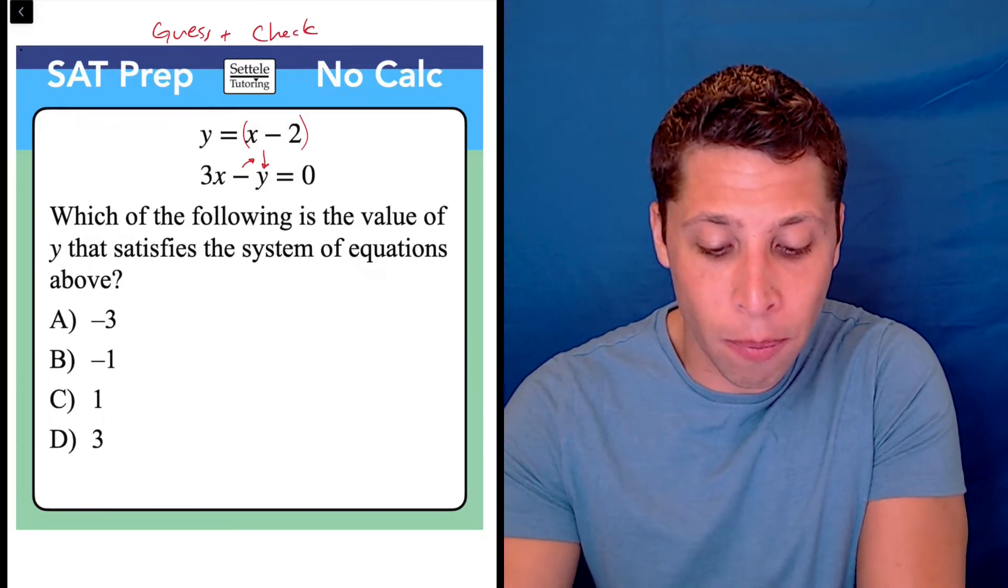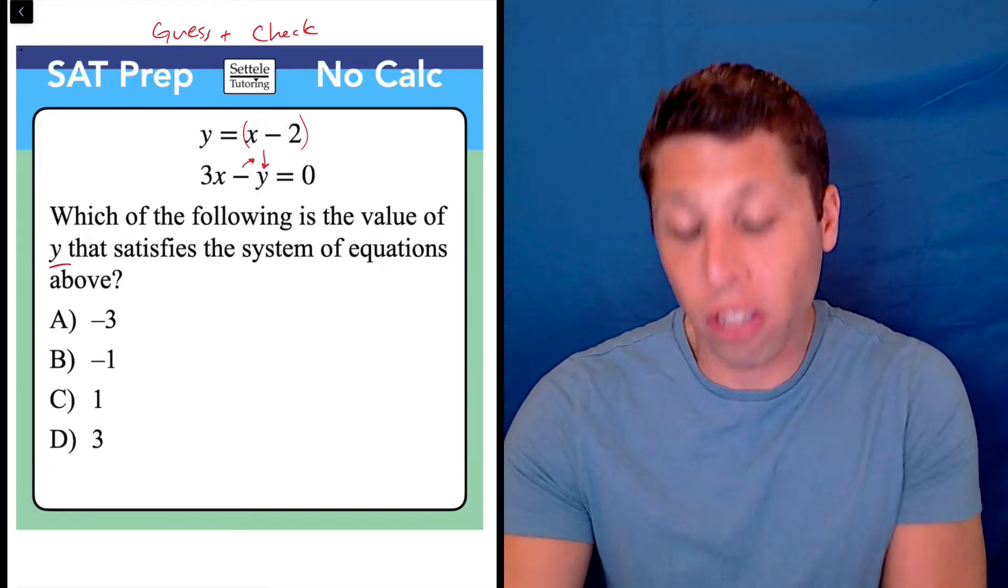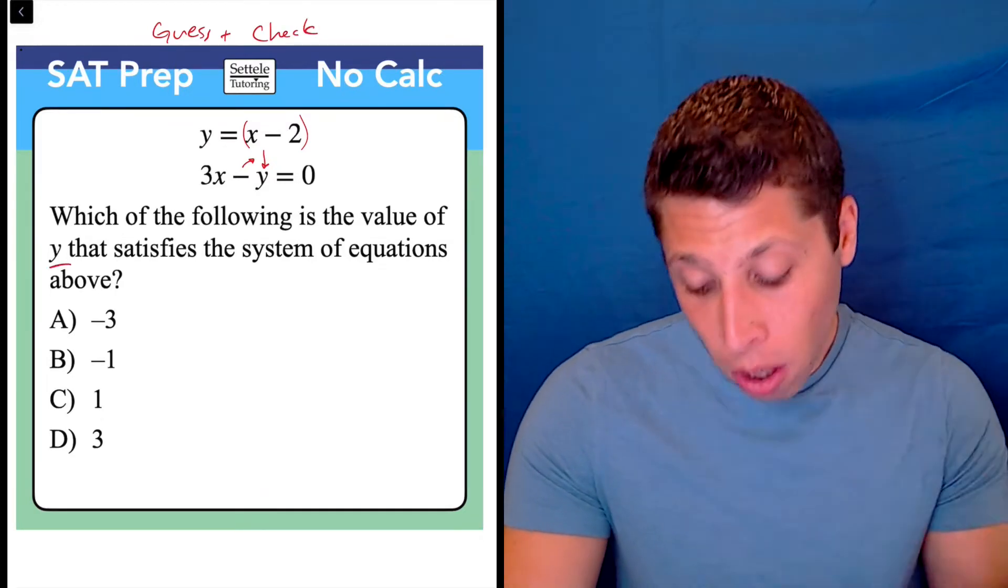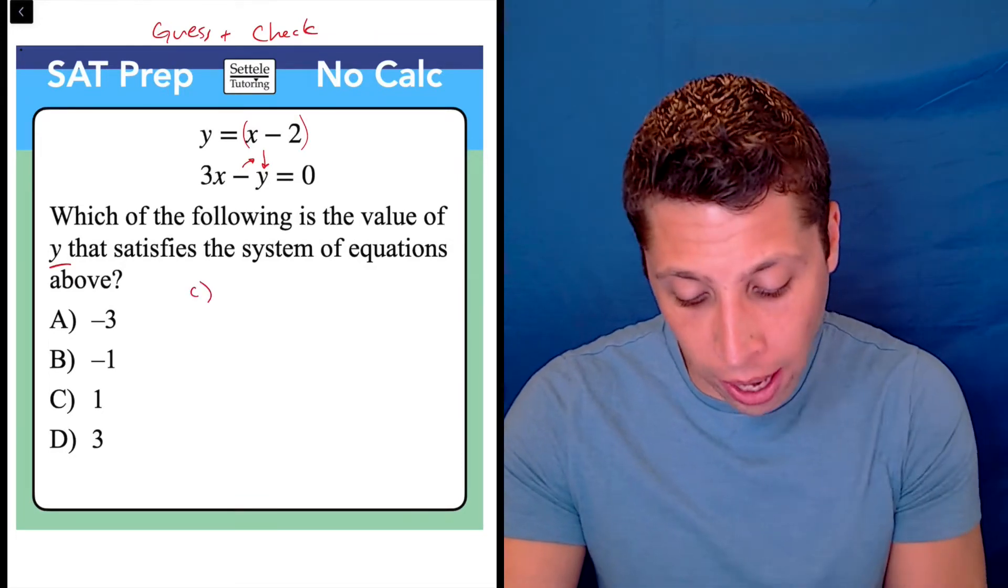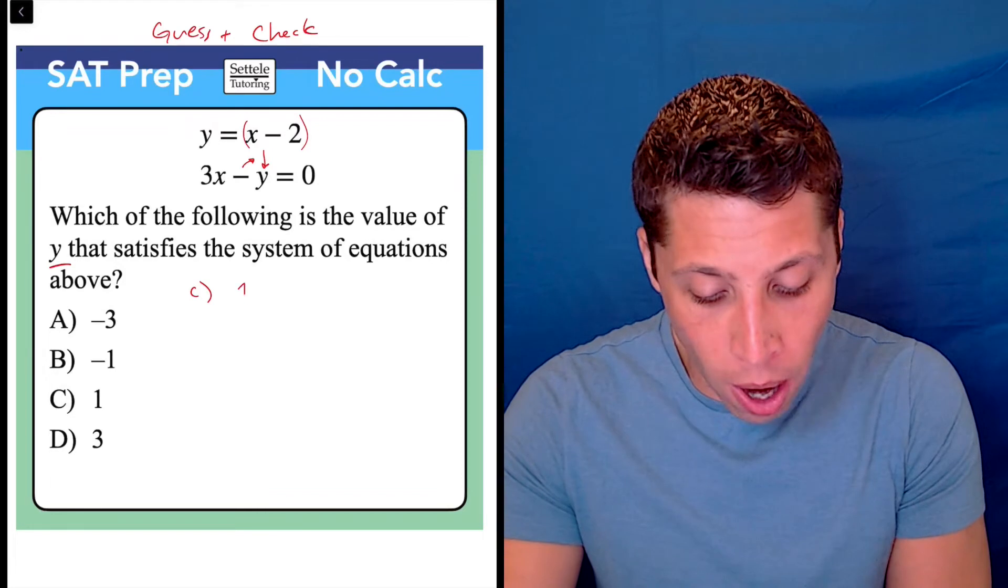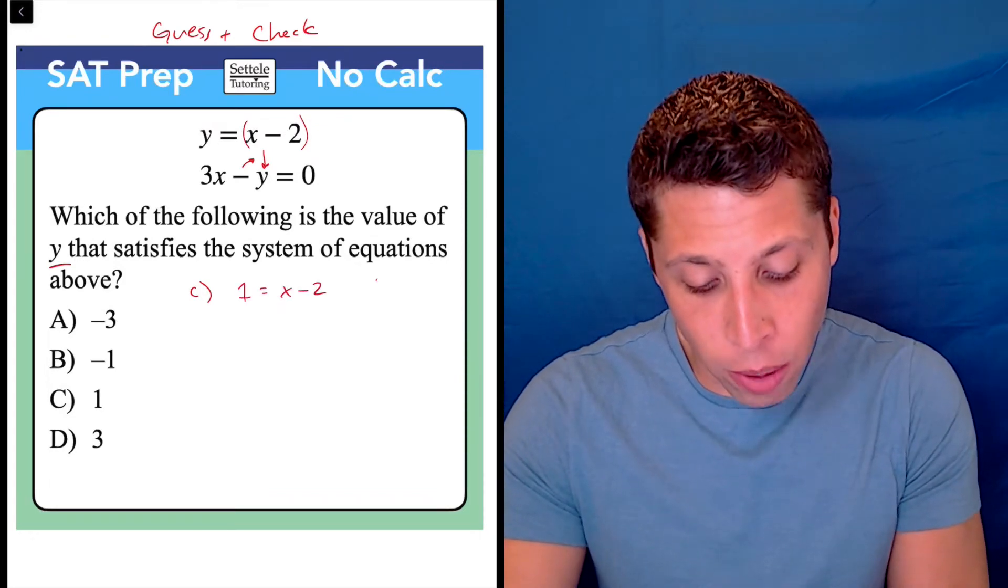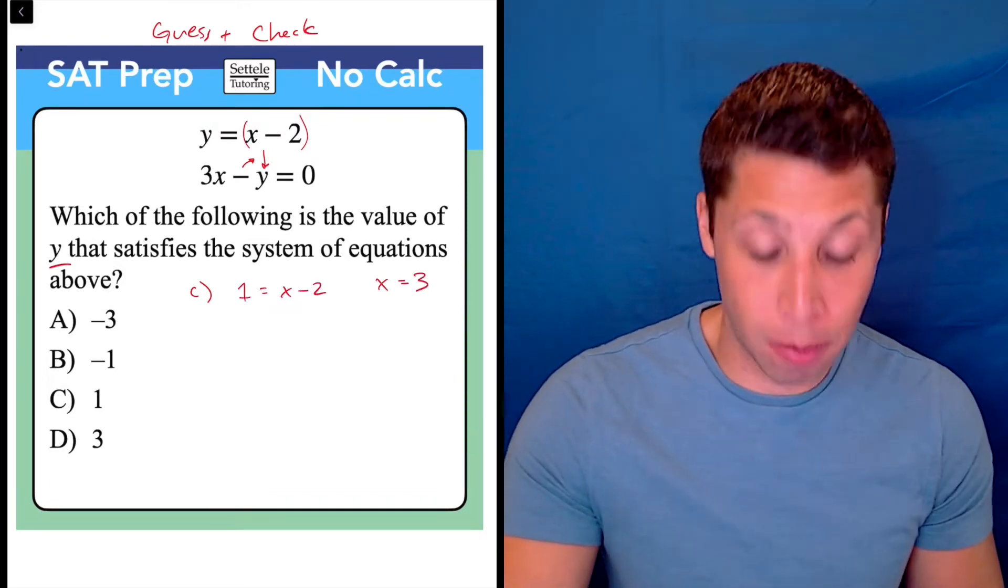This sets this question up very nicely because all of these are just the plain old value of y. So if we were being lazy about it, we might choose something like choice C to start and say, okay, in my top equation, if y were 1, that would mean x minus 2, well, x would have to be 3 for that to be the case,